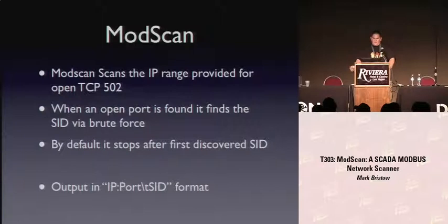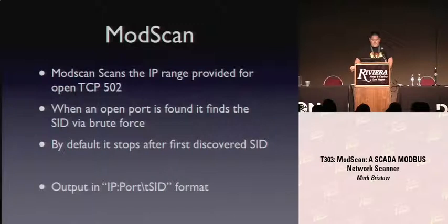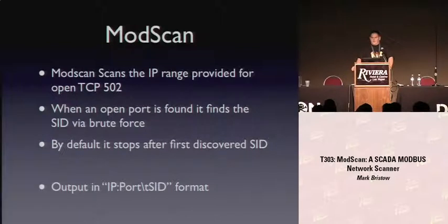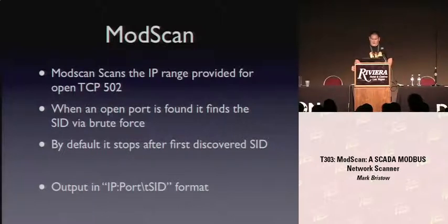Back to the tool. ModScan's only required parameter is an IP range. It will scan that range on whatever port you ask, defaulting to 502. When it finds an open port, it does a slave ID brute force - not very elegant, but it gets the job done and is surprisingly faster than you might think. By default it stops at the first slave ID it finds, for efficiency. It outputs in IP:port tab slave ID format. I intend to add CSV output, but I'm too lazy right now.